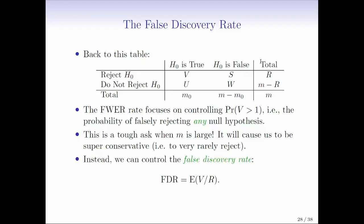So that leads to this idea called the false discovery rate. The false discovery rate, or the FDR, is the expectation of V divided by R. If we look at this table, R is the total number of null hypotheses we reject, and V is the subset of those rejected null hypotheses for which the null hypothesis actually holds. So those are the errors.